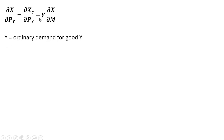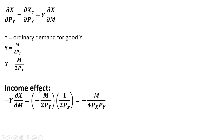One thing to note: Y here is just the ordinary demand for good Y, which is M divided by 2 times the price of good Y. So let's first get the income effect: minus Y times the partial derivative of the ordinary demand with respect to income. The first term in parentheses is just minus Y. The second term is the partial derivative of the ordinary demand function for good X with respect to income. Simplifying, we have the income effect.